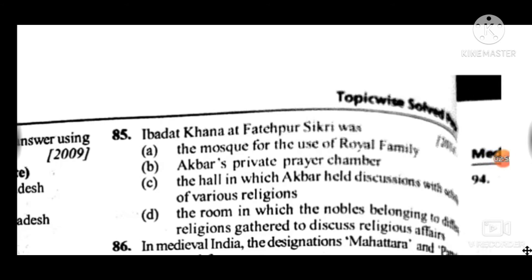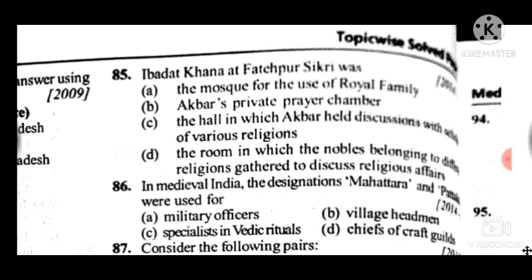Question 85: Answer is C — the hall in which Akbar held discussions with various types of religious functionaries. Question 86: In medieval India, the designations Mahattara and Pattakila were used for — answer to question 86 is B: village headman.